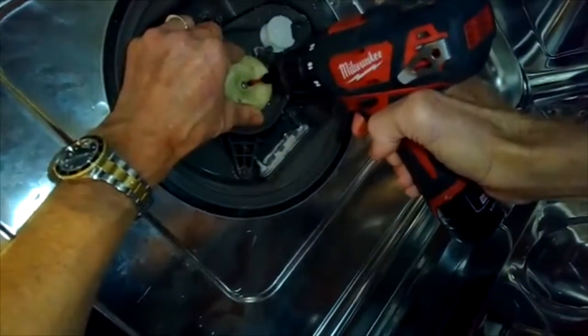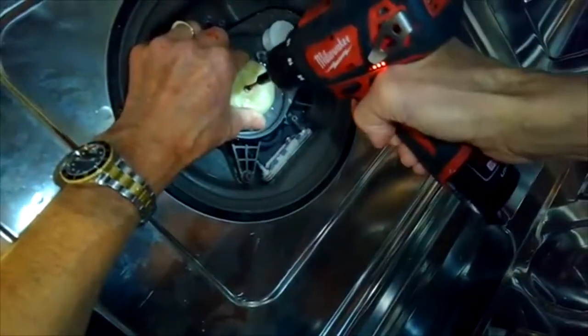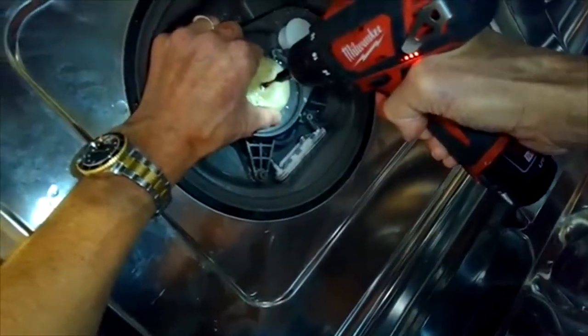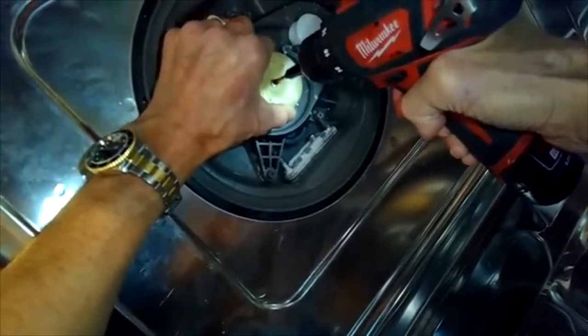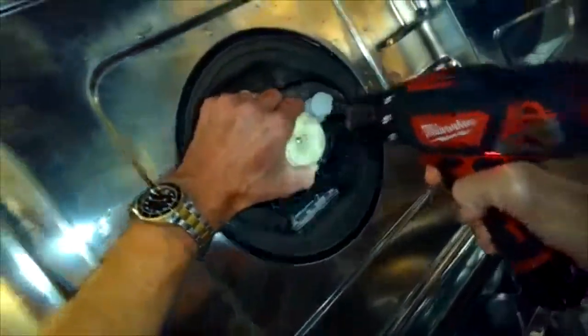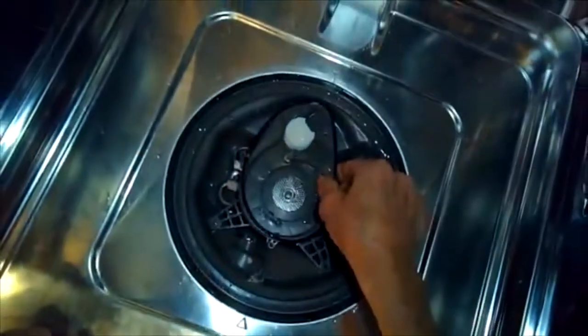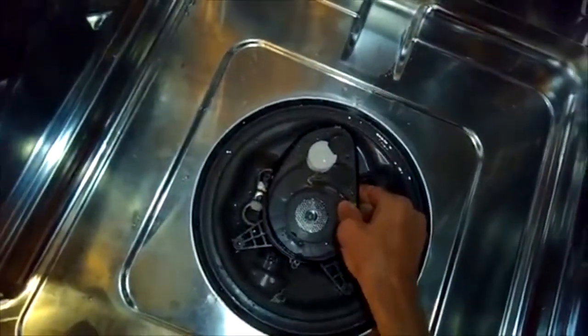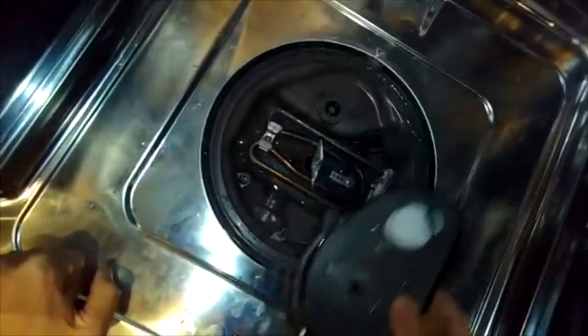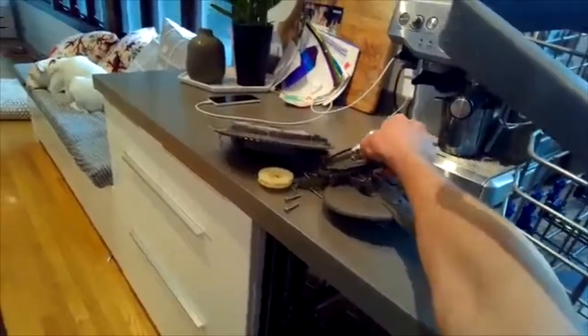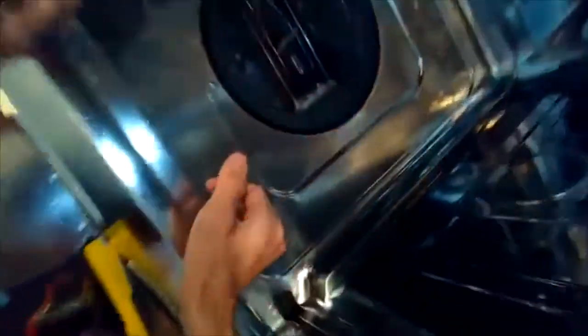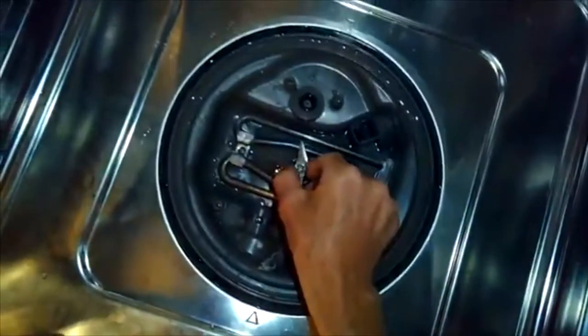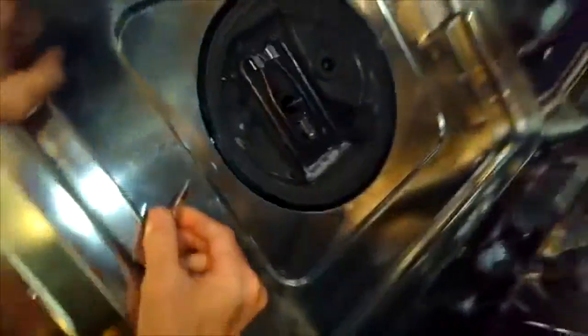We're going to go righty loosey rather than lefty loosey. So it's opposite threads. When you turn clockwise it'll loosen it. We get that out of the way, and then we're going to pull up on this lower assembly. Come straight up towards you. And then there's also one little thing in there, a cutting arm that goes onto the impeller shaft, and we just lift that thing straight up. And then that part of the disassembly is done.